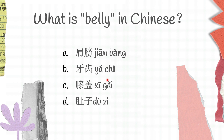Let's move on to the next question: what is belly in Chinese? A, jiānbǎng; B, yáchǐ; C, xīgài; D, duzi. Jiānbǎng is shoulder, yáchǐ is teeth, xīgài is knee, duzi is belly. And the right answer for this question is D, duzi.